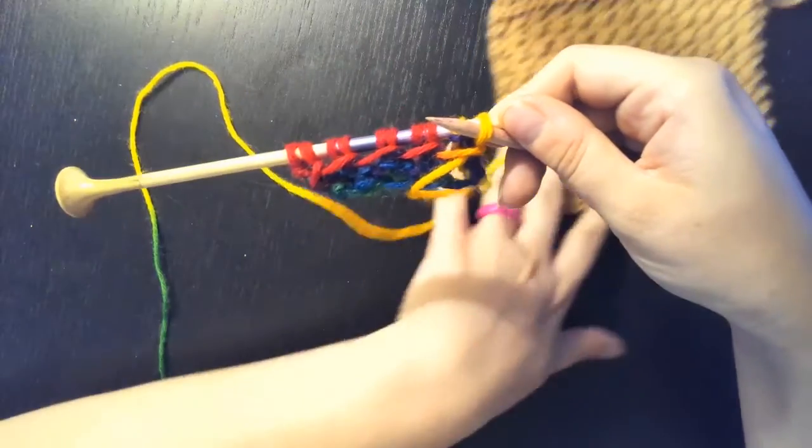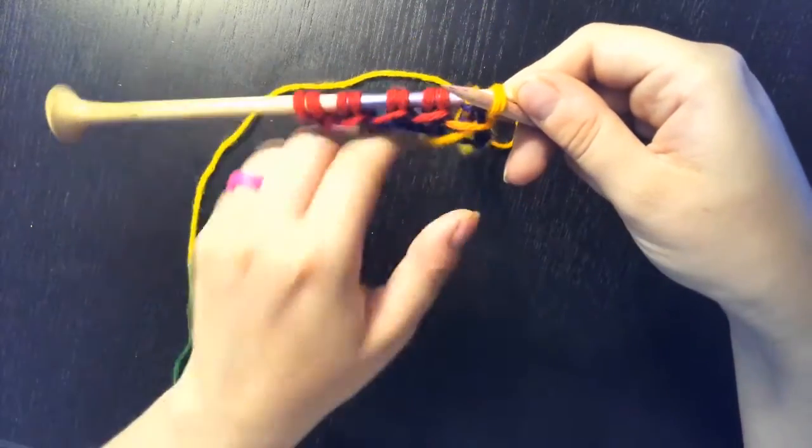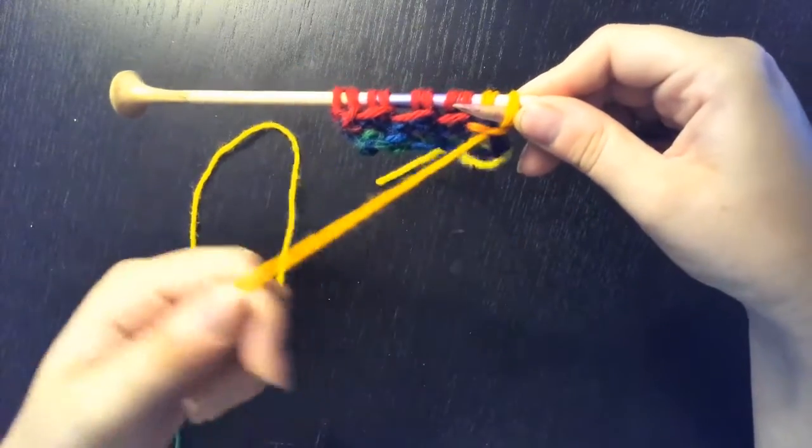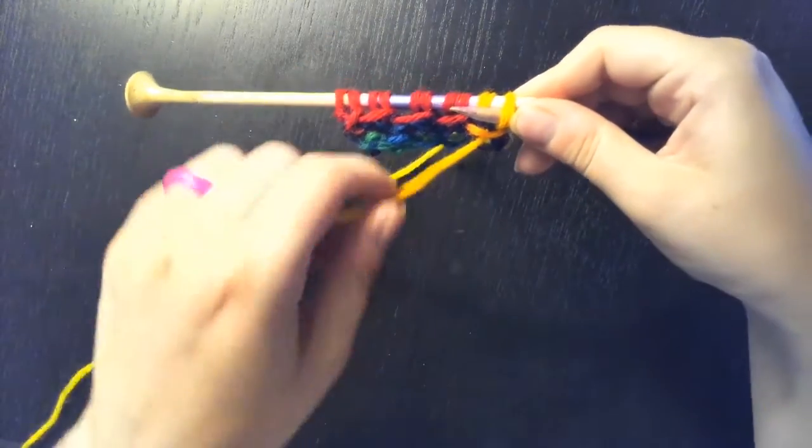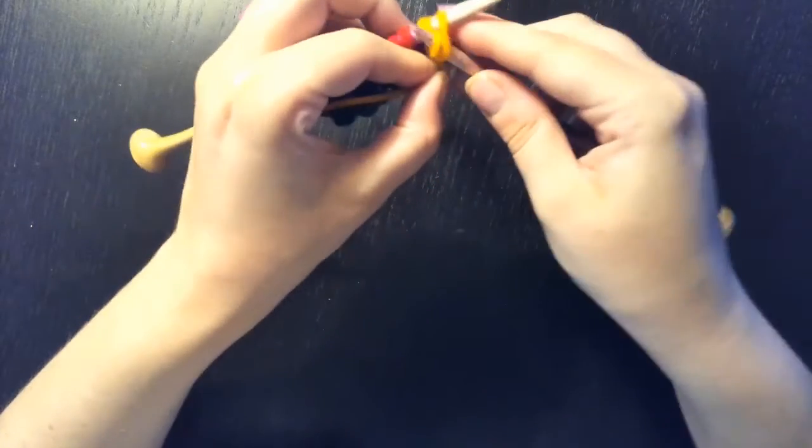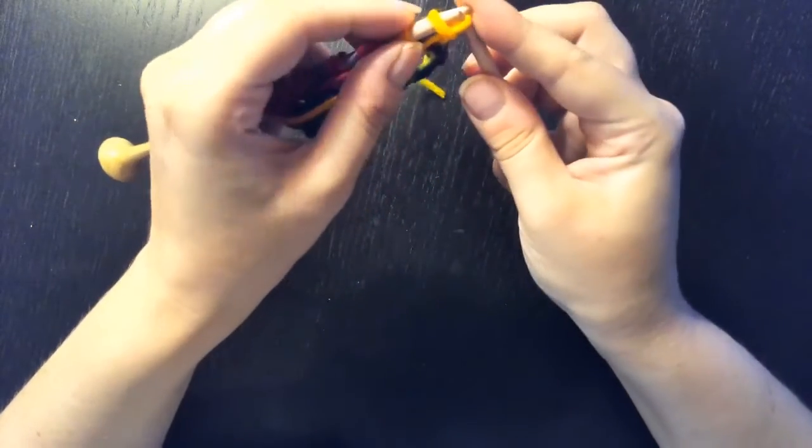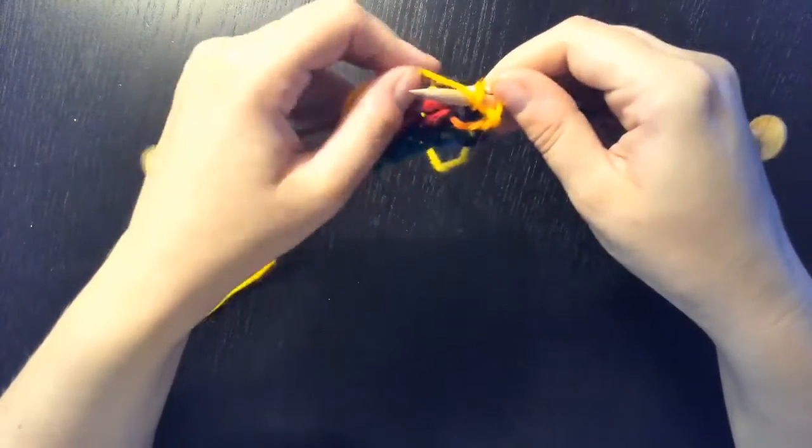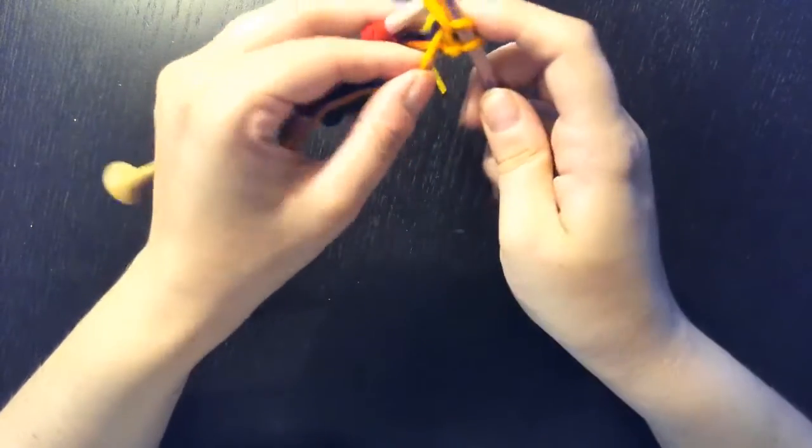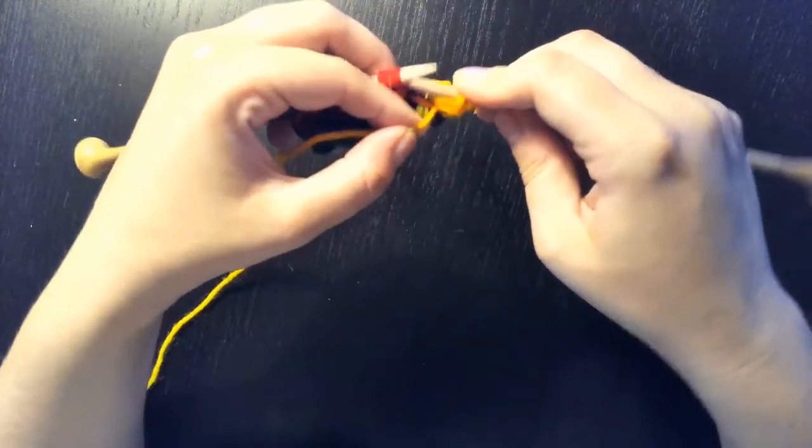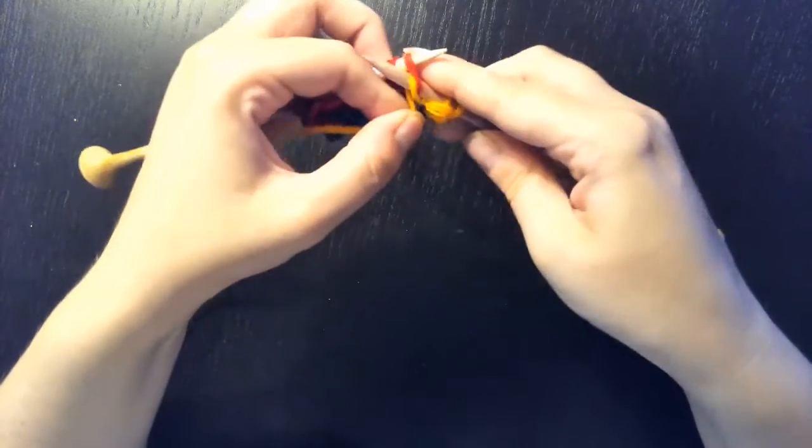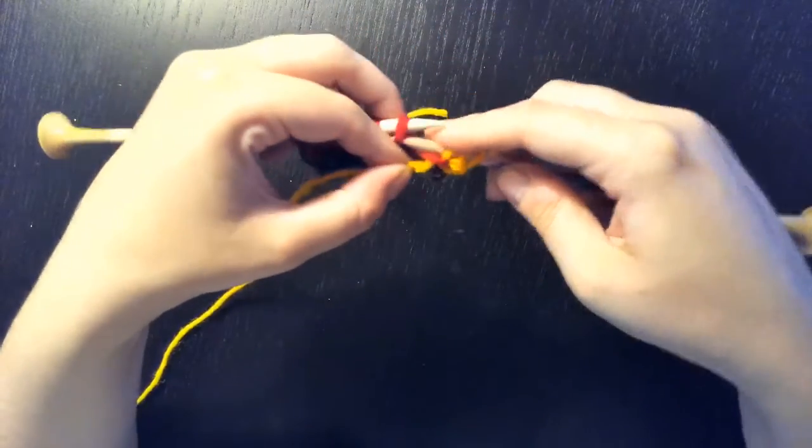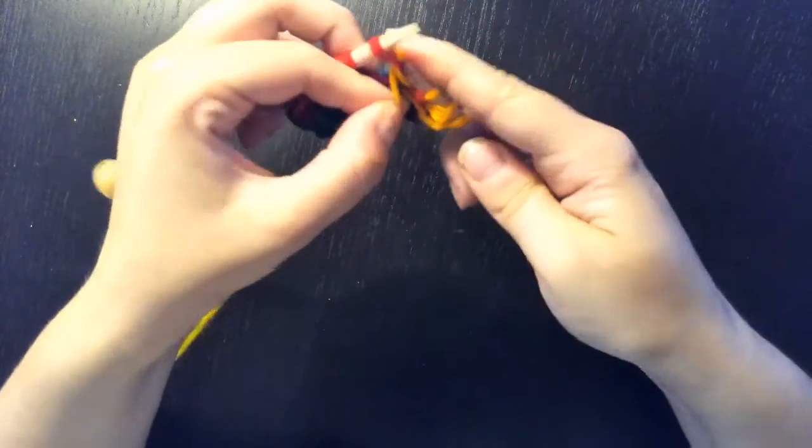And a reminder on how to purl. You'll just stick your hook in from this side. Your yarn is going to be here on the front. You yarn over and pull it through. And we're just going to keep doing that all the way down the row.